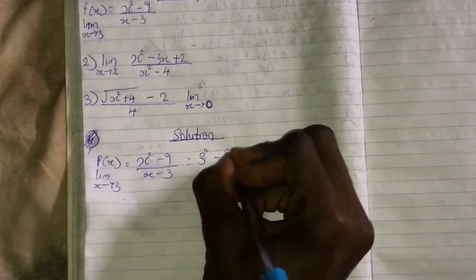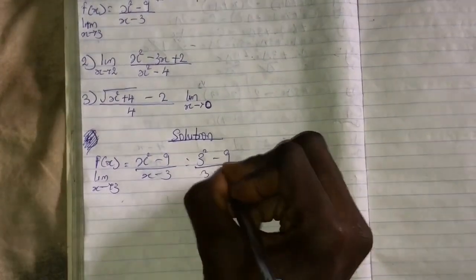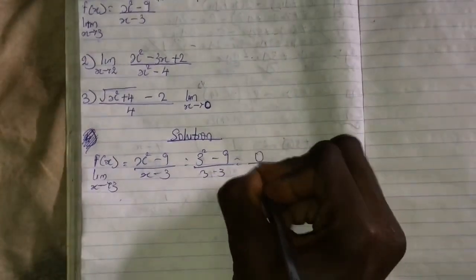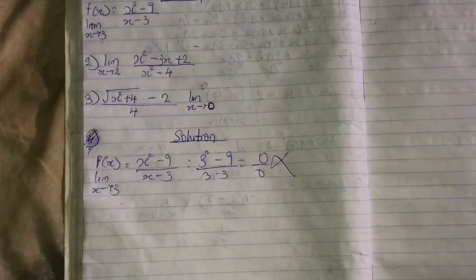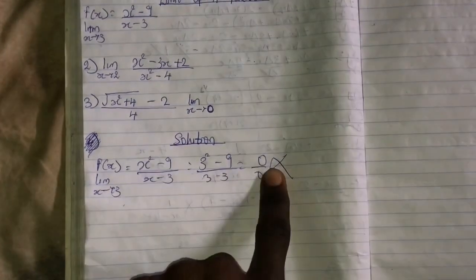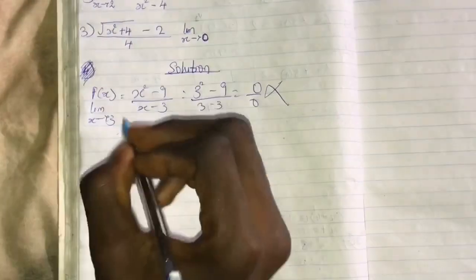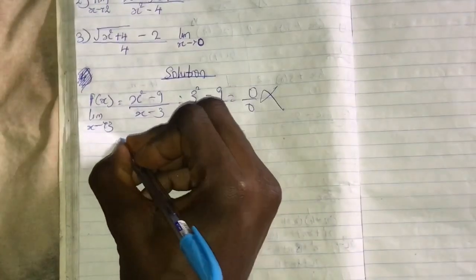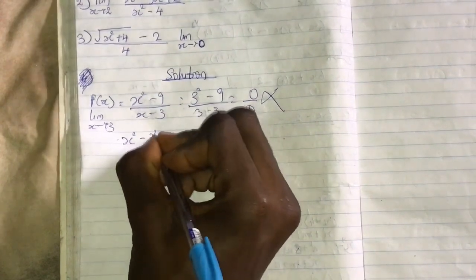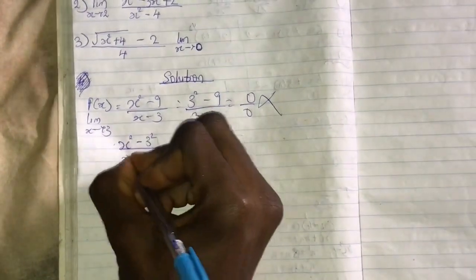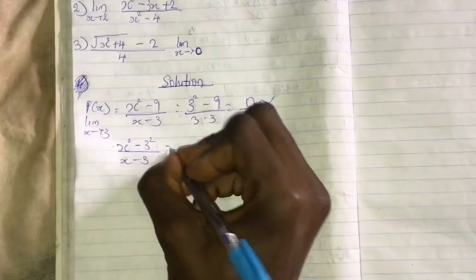This is what most of you guys will do: 3^2 - 9, then 3 - 3, and we are going to get 0/0. This is totally wrong. It is wrong to do it this way. So this is what to do for the solution: the first step is to factorize.